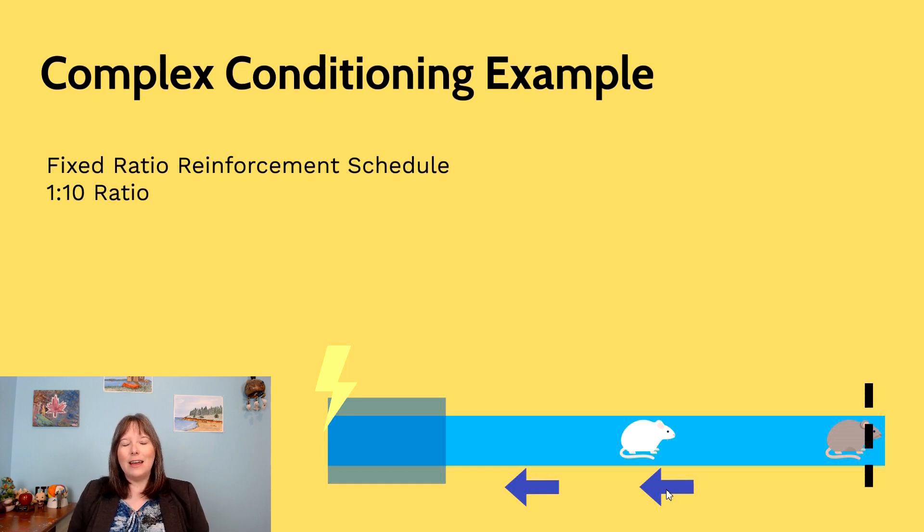And so basically they will learn this. And we can use a fixed ratio reinforcement schedule. It might not be that crossing the photo beam once will turn off the conveyor belt. We can actually make them start off with a ratio of 1 to 10, that they have to cross the photo beam 10 times before it will turn off.